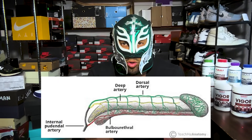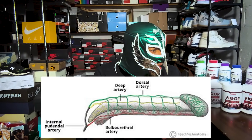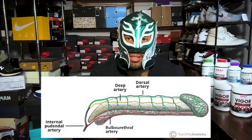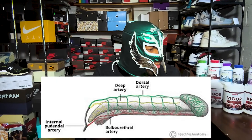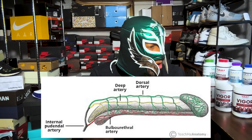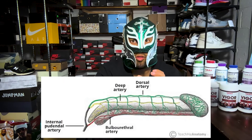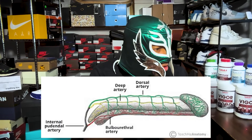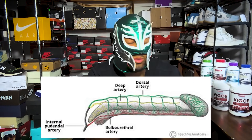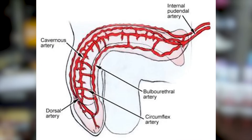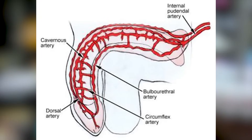The main arterial blood supply to the penis comes from the internal pudendal arteries, which branch from the internal iliac arteries. From the internal pudendal artery you get the common penile artery, which has three branches: the bulbourethral artery running along the urethra on the underside, the dorsal artery of the penis, and the cavernosal artery. The cavernosal arteries course through the center of each corpora cavernosa and branch into smaller arteries supplying the sinusoids — those vessel-like structures where smooth muscle relaxes and blood fills in to create an erection.